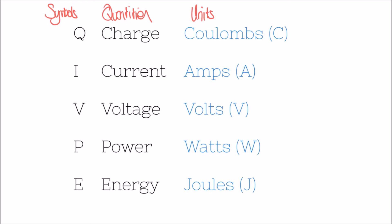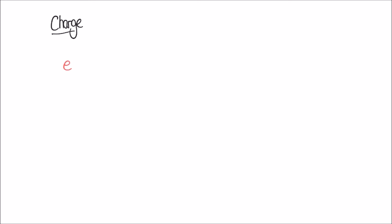We're going to have a go at calculating some of these quantities and see how they relate to each other in a series of examples. We'll begin by looking at the first quantity on our list, which is charge. We're going to start on a very small scale — rather than talking about charge in circuits straight away, I want to start by looking at the charge on one single electron.